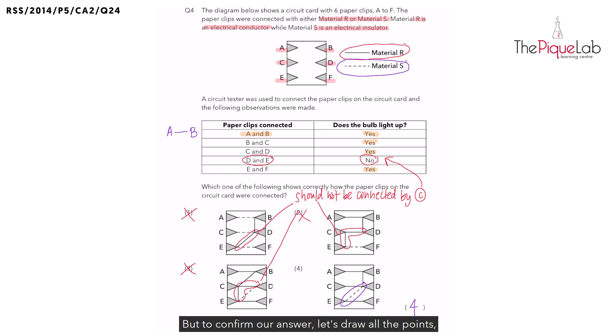But to confirm our answer, let's draw all the points which are connected by the wires at the side. So we already know points A and B are connected by wires. Now points B and C are also connected by wires.